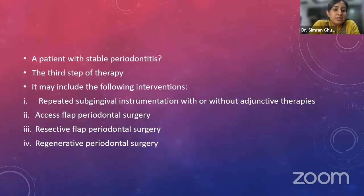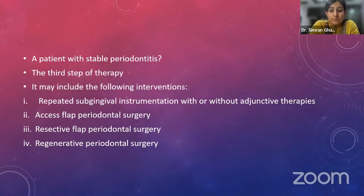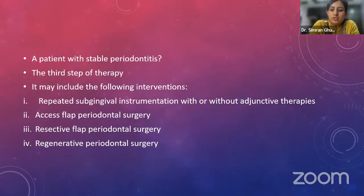A patient has stable periodontitis when treatment is successful in achieving gingival health on a reduced periodontium, defined by bleeding on probing in 10% or fewer of sites. Adequate measures for inflammation control should be implemented to prevent recurrent periodontitis, since periodontitis patients will always remain at increased risk of recurrence in the presence of gingival inflammation.